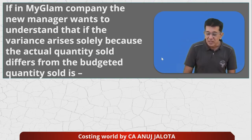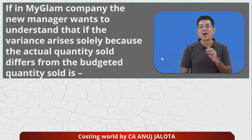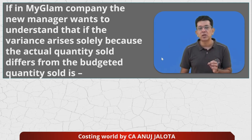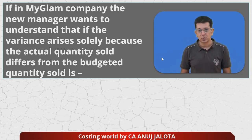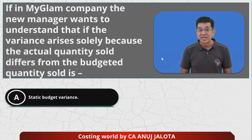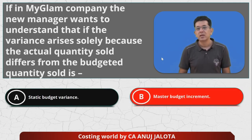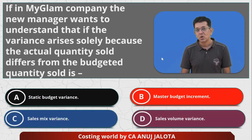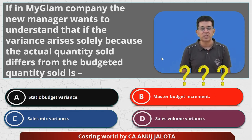In my Glam company, the new manager wants to understand: if a variance solely arose because the actual quantity sold differs from the budgeted quantity sold, then which of the following applies? Option A: static budget variance. Option B: master budget increment. Option C: sales mix variance. Option D: sales volume variance. Think of the correct answer before I explain.